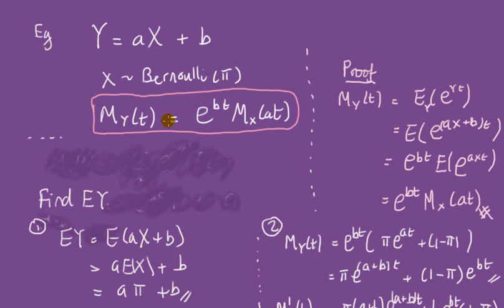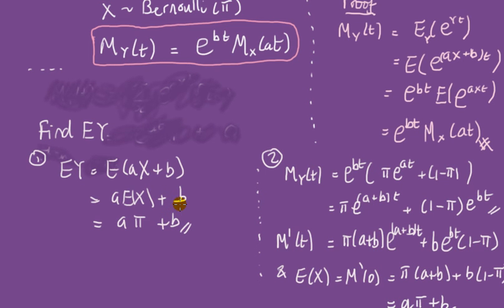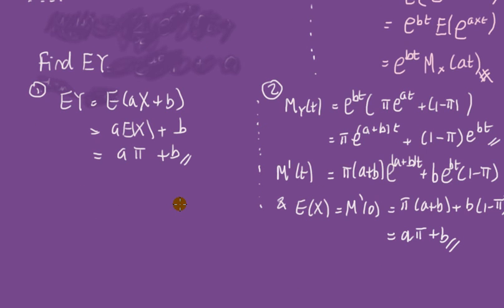I'm interested in using this to find the mean of Y. But first, let's do it directly using the expectation rules — not from first principles with summation. The expected value of Y is the expectation of a*X + b. Take expectation through the brackets: a comes out with the expectation sign giving a times expected value of x, and since x is Bernoulli we know E[X] = pi, so E[Y] = a*pi + b.